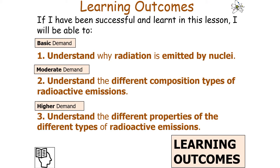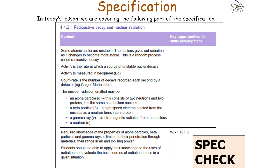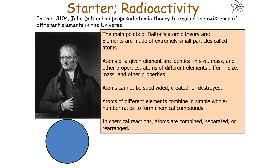If we've been successful and learnt in today's lesson, we should be able to understand why radiation is emitted by nuclei, understand the different compositions of the different radioactive emissions, and understand the different properties of the different types of radioactive emissions, which falls into GCSE Separate Science Physics topic Atomic Structure 4.4.2.1, Radioactive Decay and Nuclear Radiation.